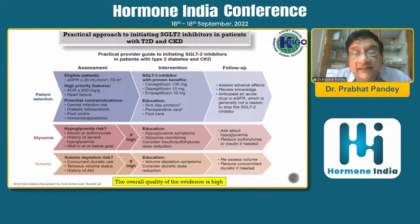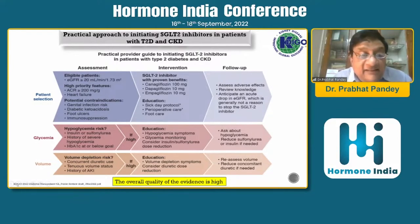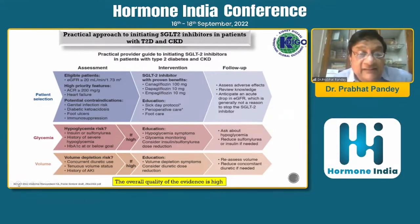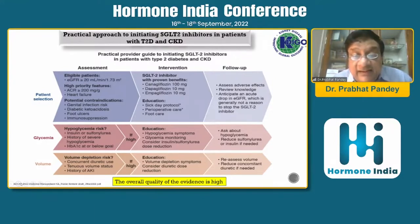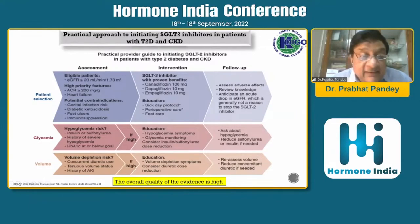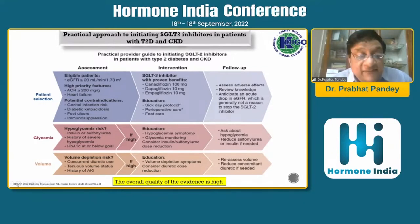There is a practical approach to introducing an SGLT2 inhibitor in a patient with type 2 diabetes and CKD. Patient selection is very important: assessment, then intervention, then follow-up. If GFR is more than 20 ml per minute and the ACR albumin-creatinine ratio is elevated, SGLT2 inhibitor should be started unless there is a contraindication. Various SGLT2 inhibitors have their dose schedules. Follow-up should assess glycemia and monitor for volume reduction as both a benefit and a side effect.